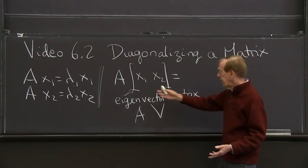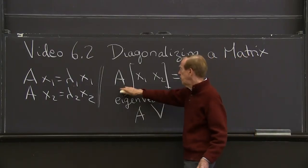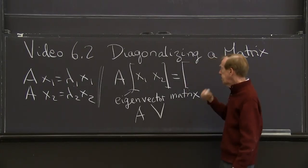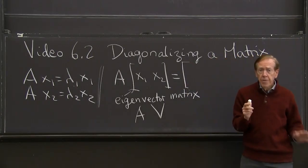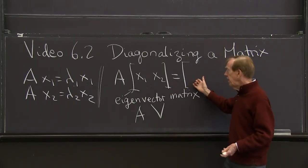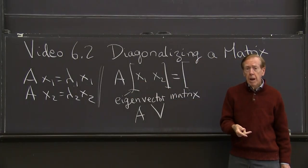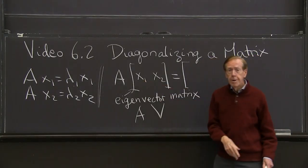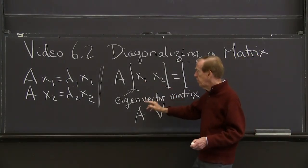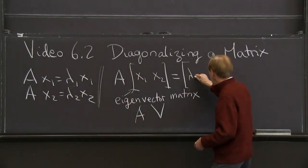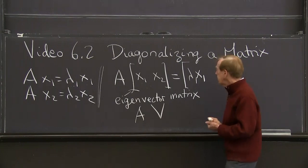So what do I get? I get a matrix that's 2 by 2. I'm getting a 2 by 2 matrix. What's the first column? The first column of the output is A times the first column of the input. And what is A times x1? Well, A times x1 is lambda 1 times x1. So that first column is lambda 1 x1.